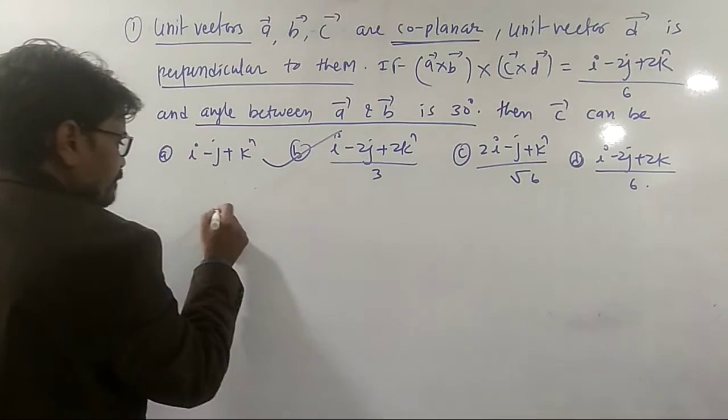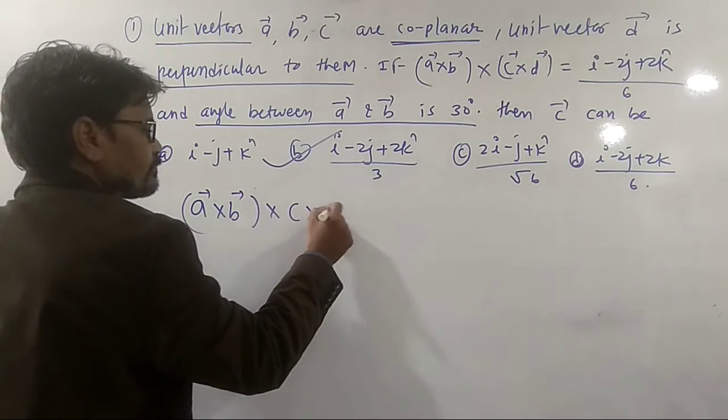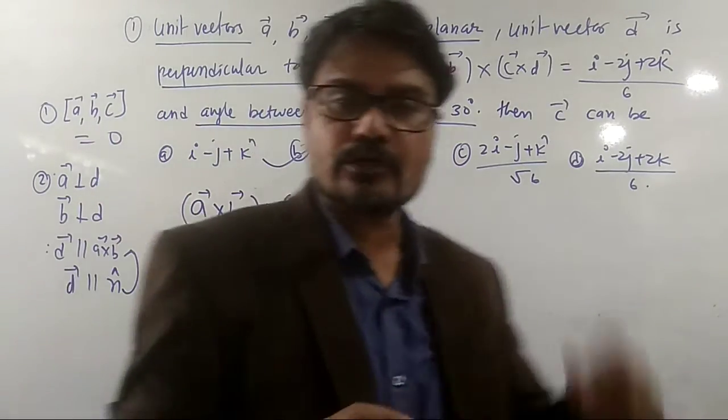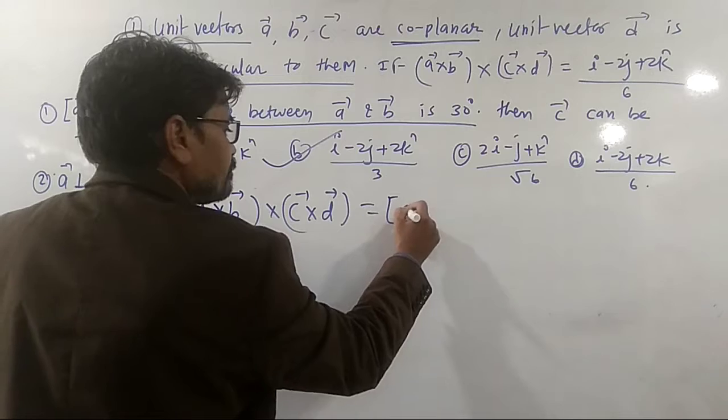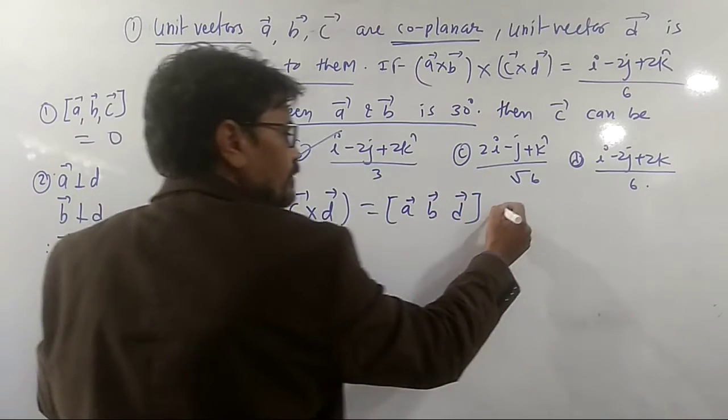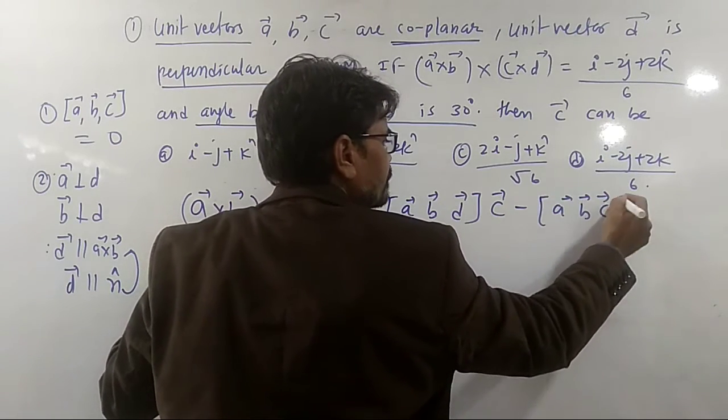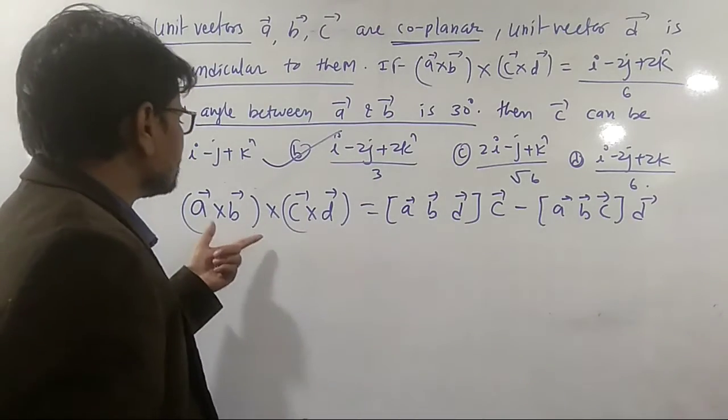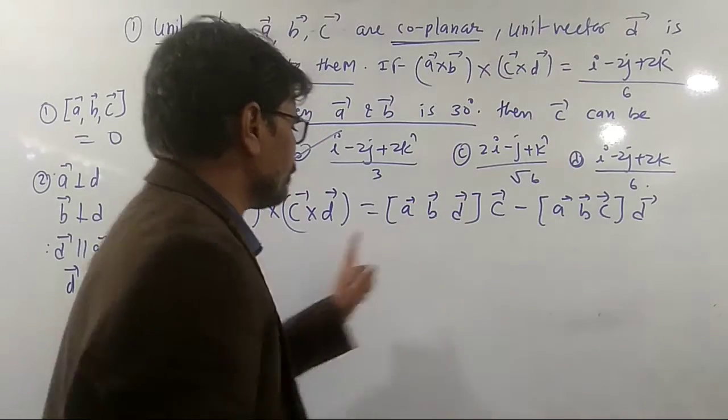First of all, we have to use this formula: A cross B cross C cross D. That means the cross product of four vectors. What is the formula? A, B, D scalar triple product into C minus A, B, C scalar triple product into D. So you should remember to write the cross product of 4 vectors. That is the formula.